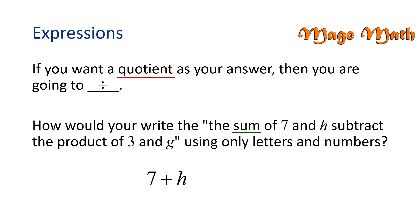But then the sentence says to subtract the product of 3 and g. We want to focus on the key word of product first. Product means to multiply, so in this case we want to multiply 3 and g. So we will write 3g. And then we'll go back to the word subtract, and we'll write a subtraction symbol between our two expressions.